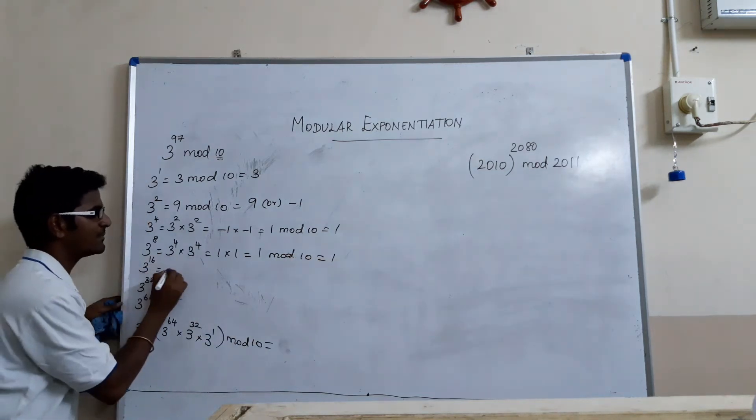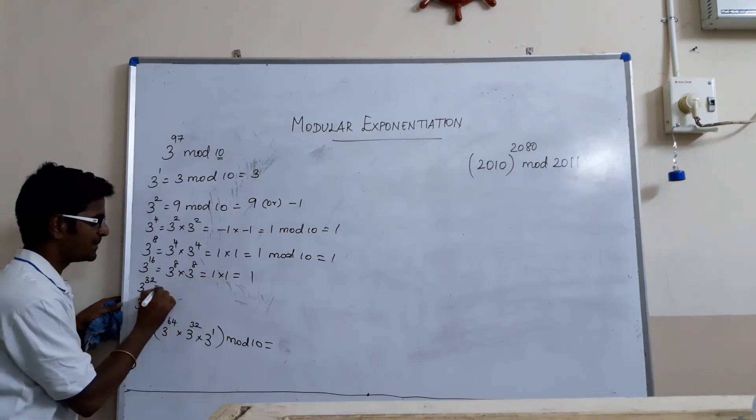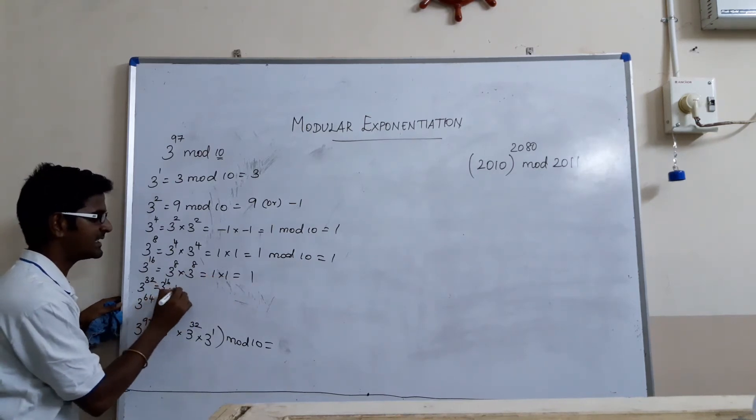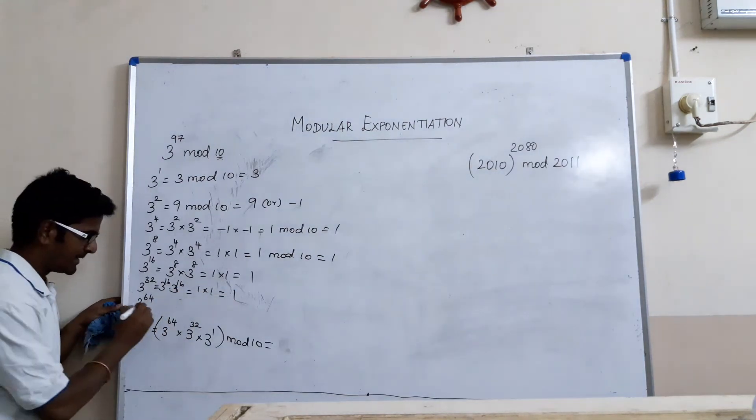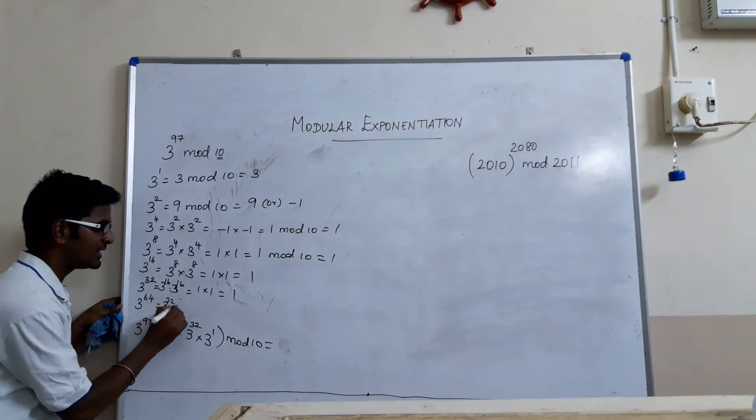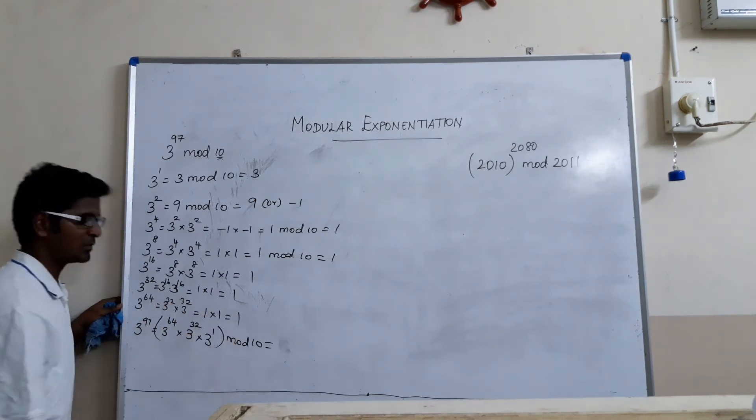So, 3 power 16 can be written as 3 power 8 into 3 power 8 which is equal to 1 into 1 which is equal to 1. 3 power 32 equal to 3 power 16 into 3 power 16. Again, 1 into 1 is going to be 1. 3 power 64 is equal to 3 power 32 into 3 power 32 which is equal to 1 into 1 which is equal to 1 only.